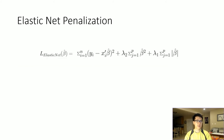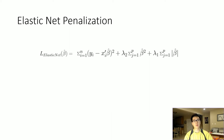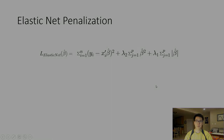And this is the penalization. As noted here, you just have your L1 and L2 norms associated at the very end, combined with your typical linear regression cost function. So this is the entire thing for elastic net penalization.